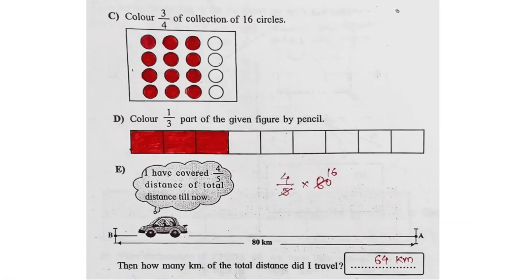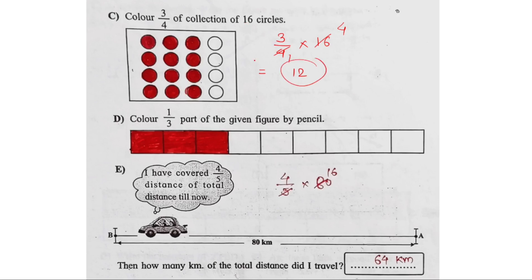Color 3 by 4 of the collection of 16 circles. From the 16 circles, 3/4 means divide 16 by 4, which gives 4, then multiply by 3, giving 12. So color 12 out of the 16 circles.